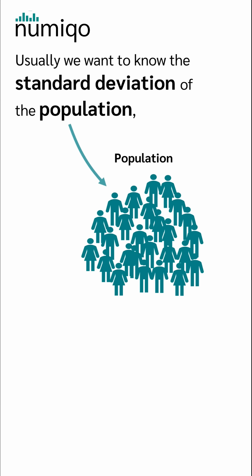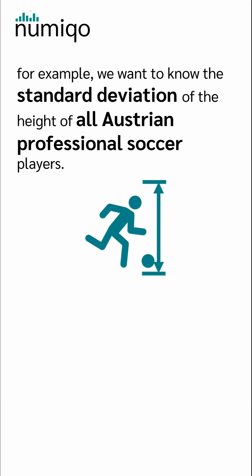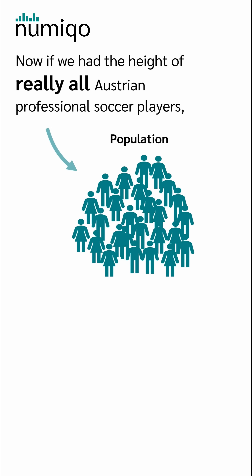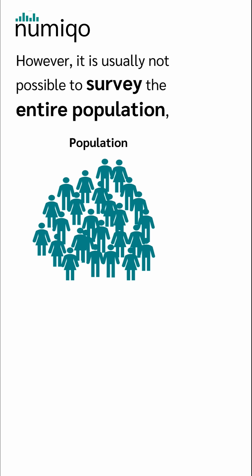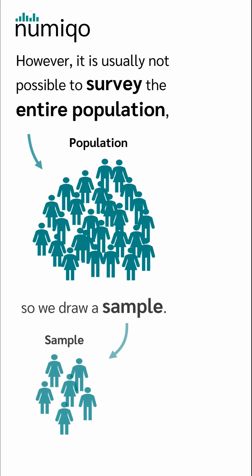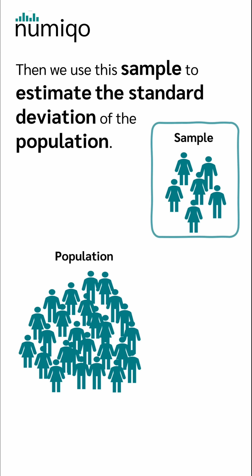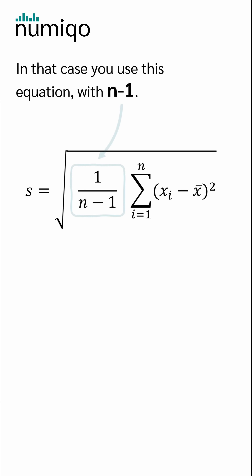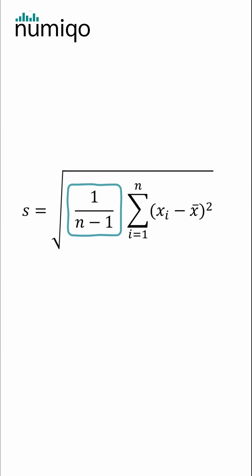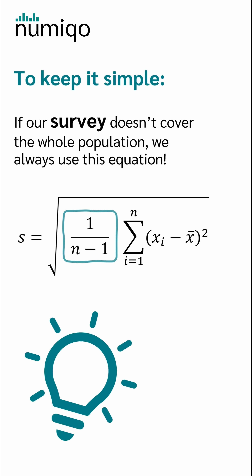Usually, we want to know the standard deviation of the population. For example, we want to know the standard deviation of the height of all Austrian professional soccer players. Now, if we had the height of really all Austrian professional soccer players, we would use the equation with 1 divided by n. However, it is usually not possible to survey the entire population, so we draw a sample. Then we use the sample to estimate the standard deviation of the population. In that case, you use the equation with n-1. To keep it simple: if our survey doesn't cover the whole population, we always use the equation with n-1.